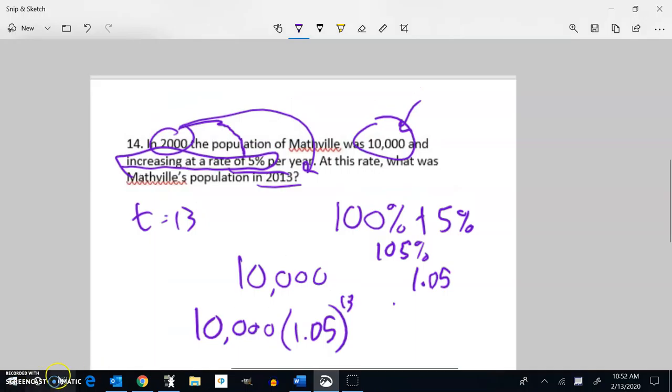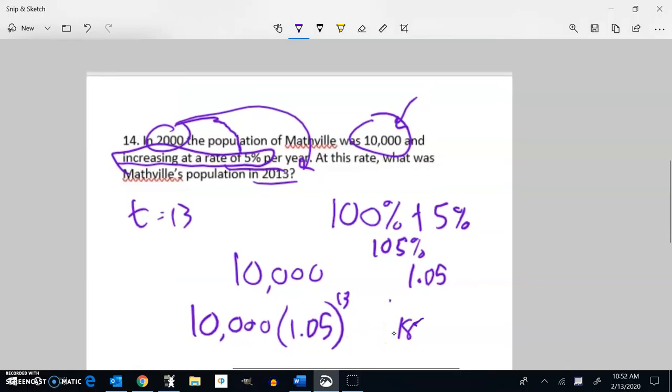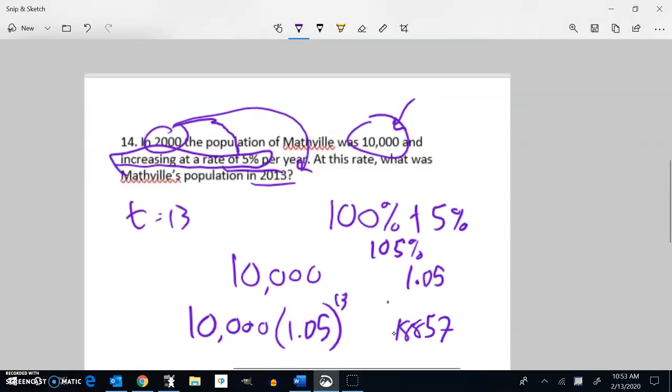And it got pretty big. Come on back so I can see it. 18,856 about, 18,857. Well then, you know, it's a pretty round number.